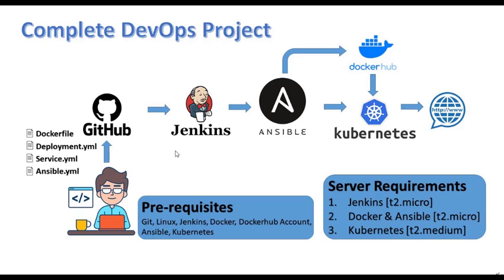From the Jenkins server we will send the files to the Ansible and Kubernetes servers accordingly. I will create two replica pods for a website, and it will be automatically deployed using Kubernetes so we can open that website through our browser.